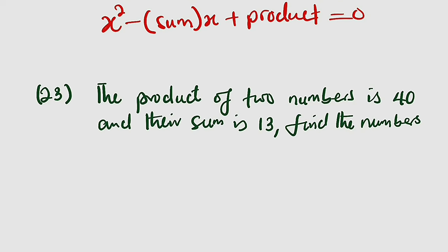Question number 23: the product of two numbers is 40 and their sum is 13. We are asked to find the numbers. Since these are objective questions, if you have a shortcut you can apply it. Two numbers that multiply to get 40 and add to get 13 are definitely 8 and 5.